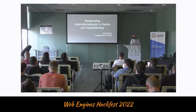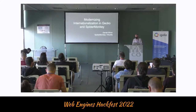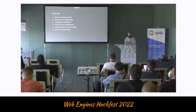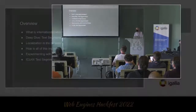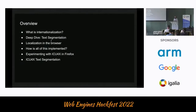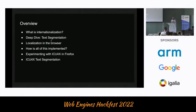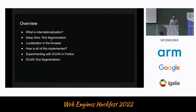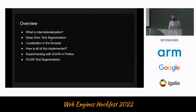I'd like to talk about a project we've had ongoing at Mozilla for the past year and a bit to modernize internationalization in Gecko and SpiderMonkey. I'm planning to speak a little bit about what internationalization is, go into a deeper dive about text segmentation, talk about localization in the browser, how all of this is implemented, and some experimentation we've done with ICU4X inside Firefox. ICU4X is a library for internationalization, and we're looking forward to using ICU4X for our text segmentation.